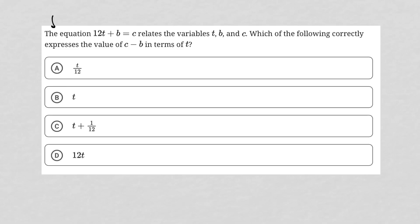So this question says, the equation 12t plus b equals c relates the variables t, b, and c. Which of the following correctly expresses the value of c minus b in terms of t?